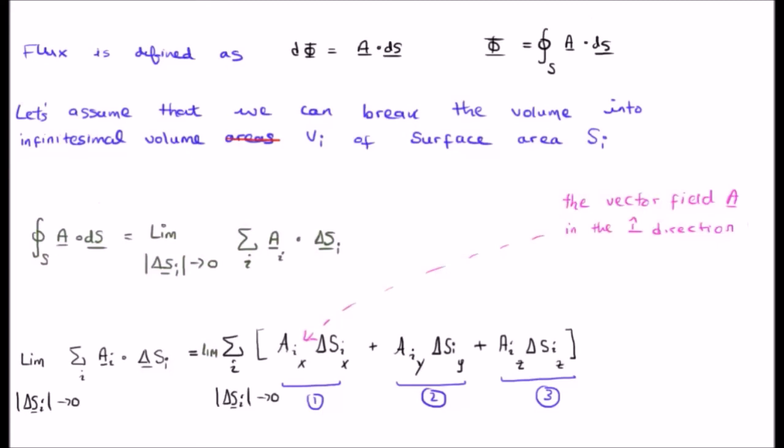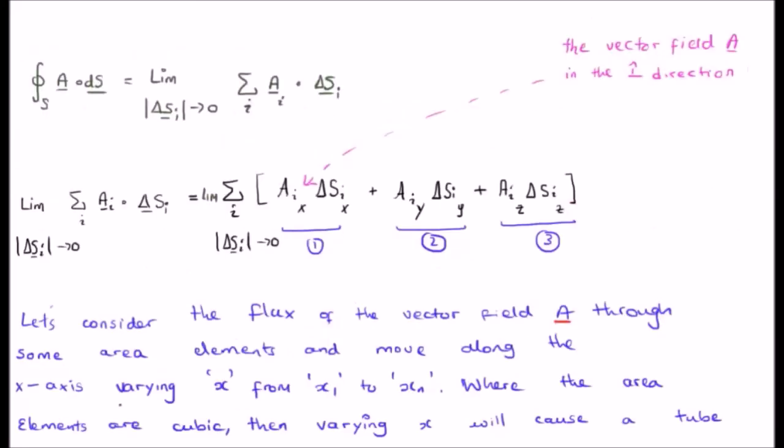That should make a lot of sense to you because it is essentially a Riemann sum. But both the surface area element and the vector field itself are all in three dimensions. So we can really look at this as having three separate components in the x, in the y, and in the z. And we still look for the limit as delta S sub i approaches zero. So we're going to consider the flux of the vector field capital A through some area elements and move along the x axis, varying x from x sub i to x sub n. Where the area elements are cubic, then varying x will cause us to sweep out a tube or a volume which is a tube.